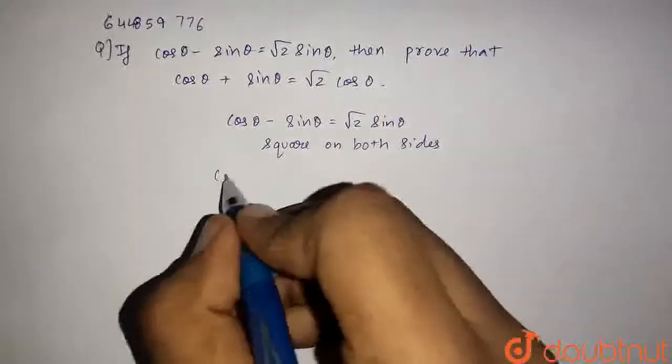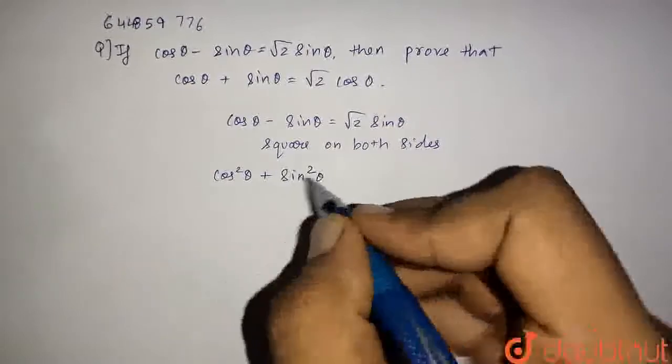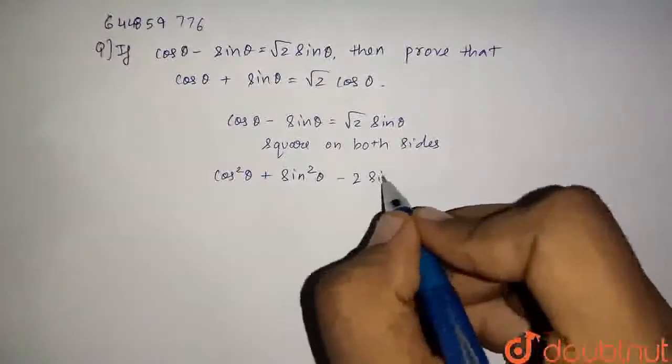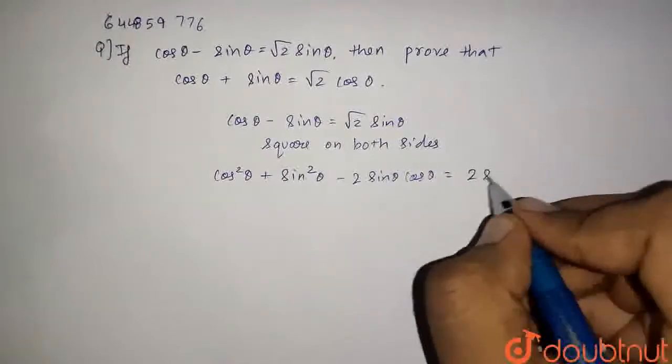We will get cos²θ plus sin²θ minus 2 sin θ cos θ is equal to 2 into sin²θ.